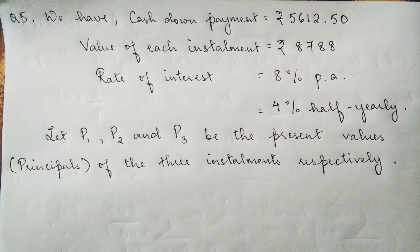They've given us cash down payment which is rupees 5612.50, value of each installment rupees 8788, and rate of interest 8% per annum half yearly. So we will divide it by 2, it will become 4% half yearly.